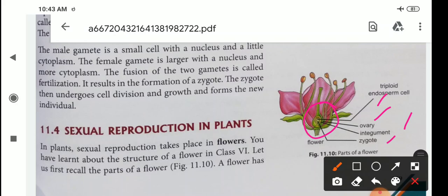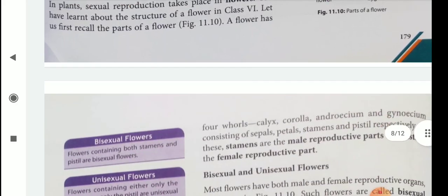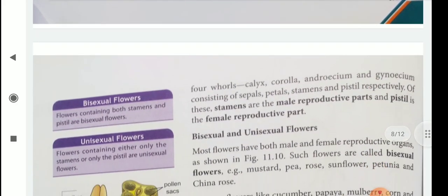Now we will read about the stalk. In plants, sexual reproduction takes place in flowers. You have learnt about the structure of a flower in class 6. Let us first recall the parts of a flower. A flower has four whorls: calyx, corolla, androecium, and gynoecium.